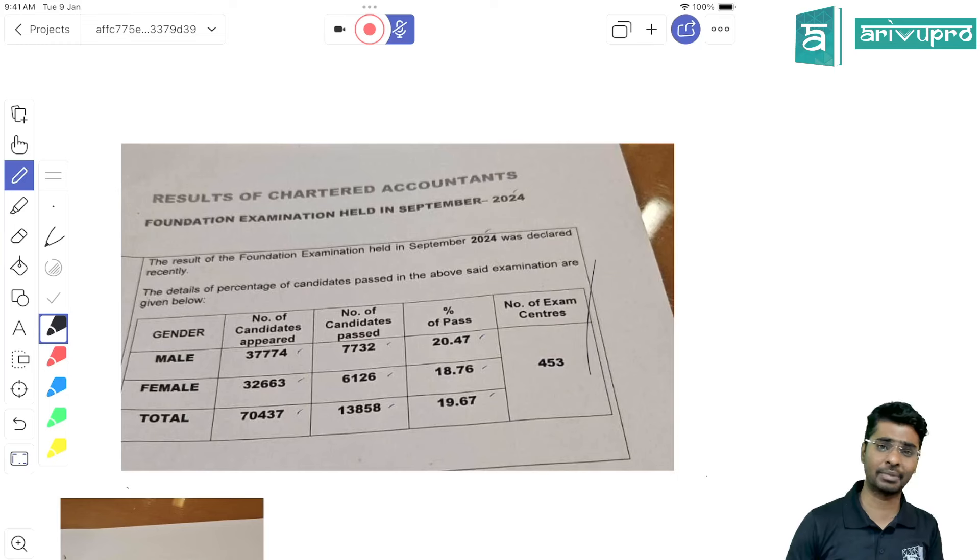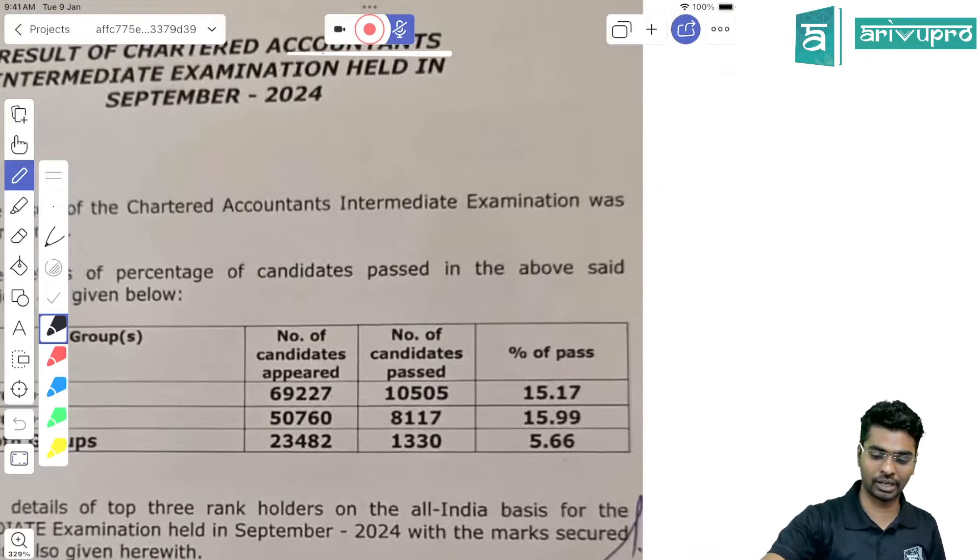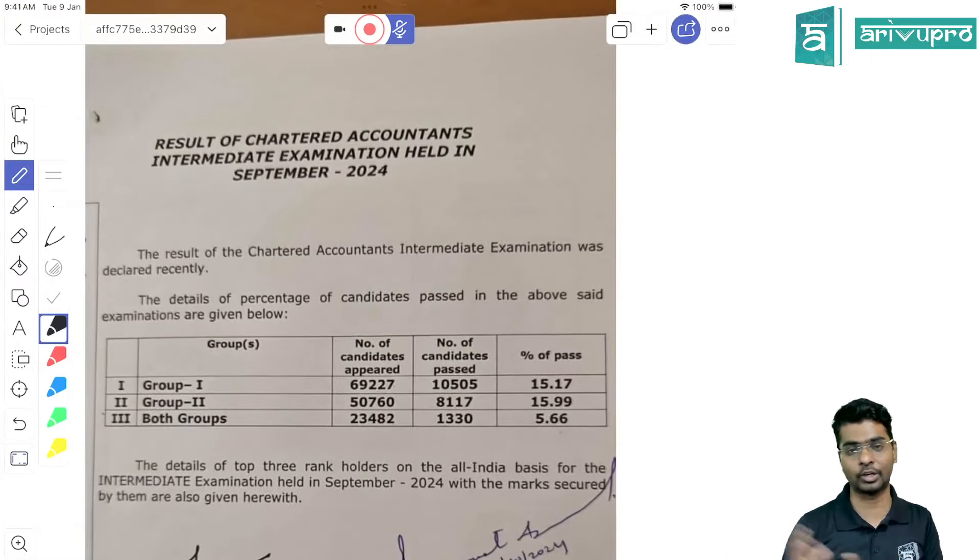The results have been around 20 percent. With regards to CA intermediate, group one and group two have been around 15 and 16 percent, which is a very good result compared to ICA standards. But when you see both modules at a time, it's only around five and a half percent.